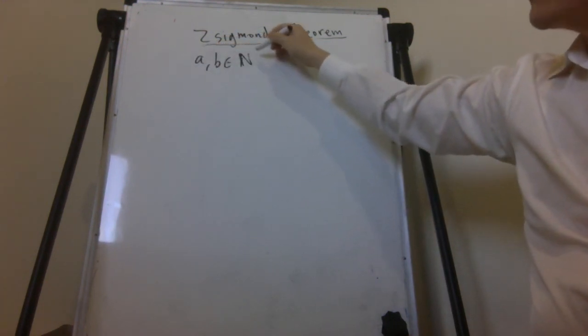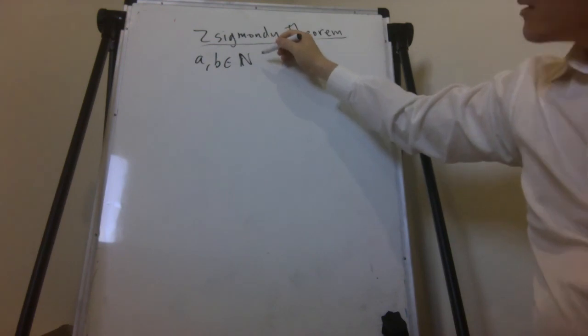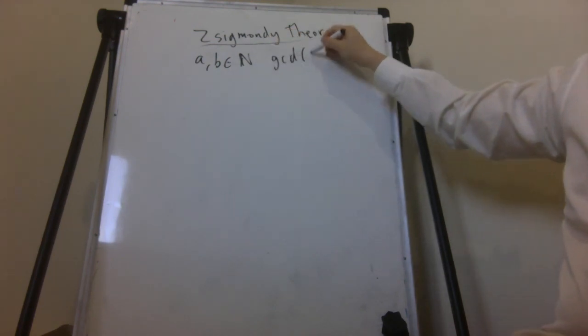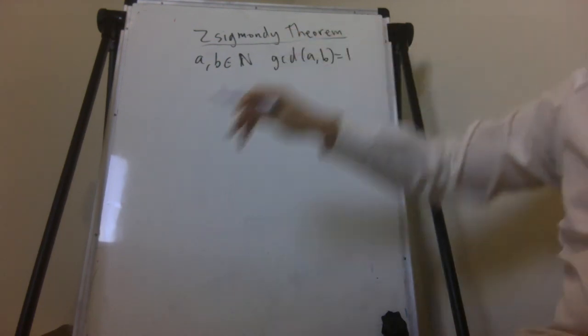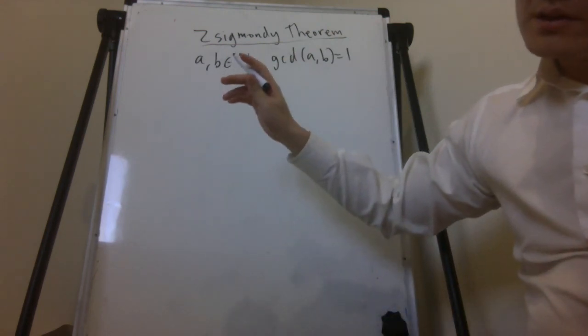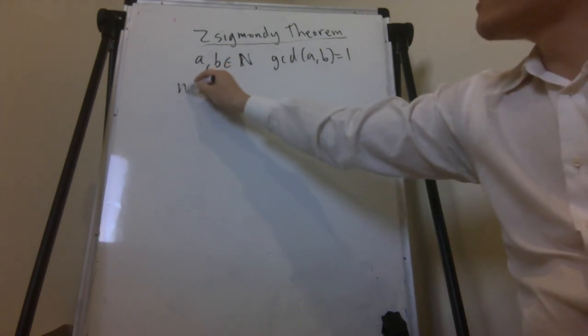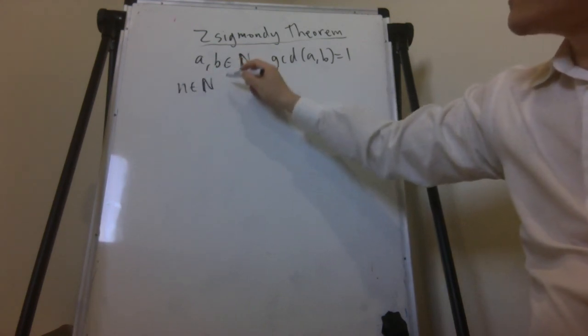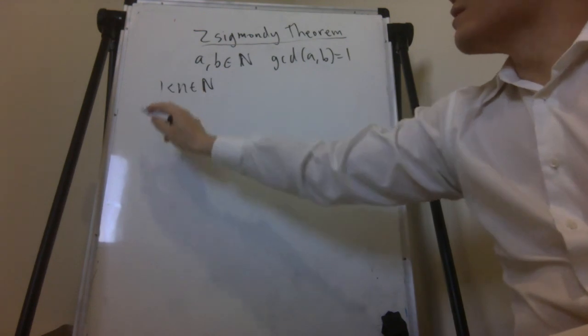Let a and b be natural numbers such that gcd of a and b is 1. n is a natural number greater than 1.